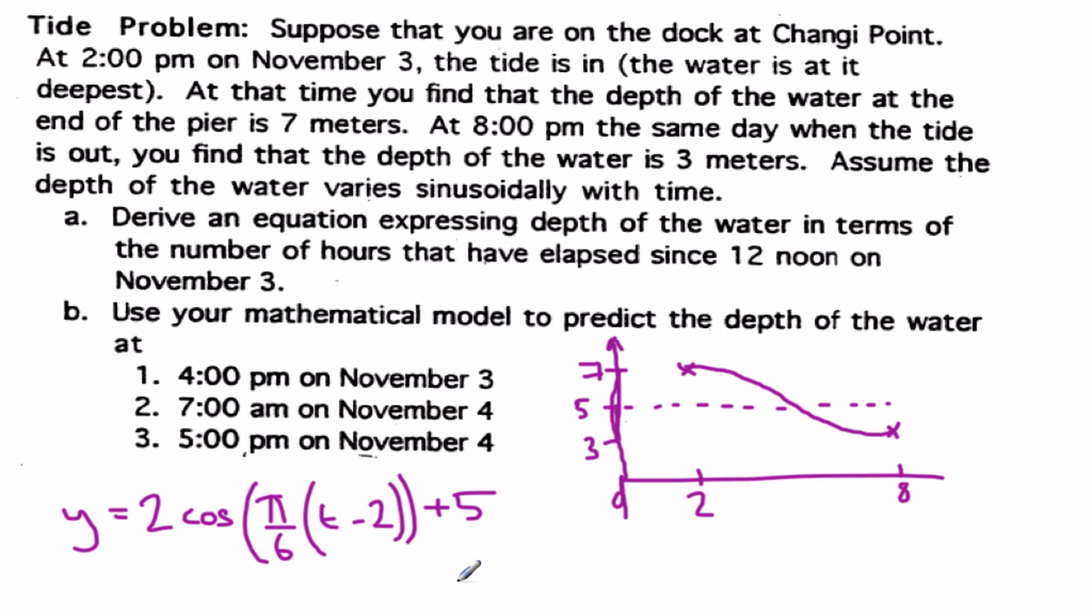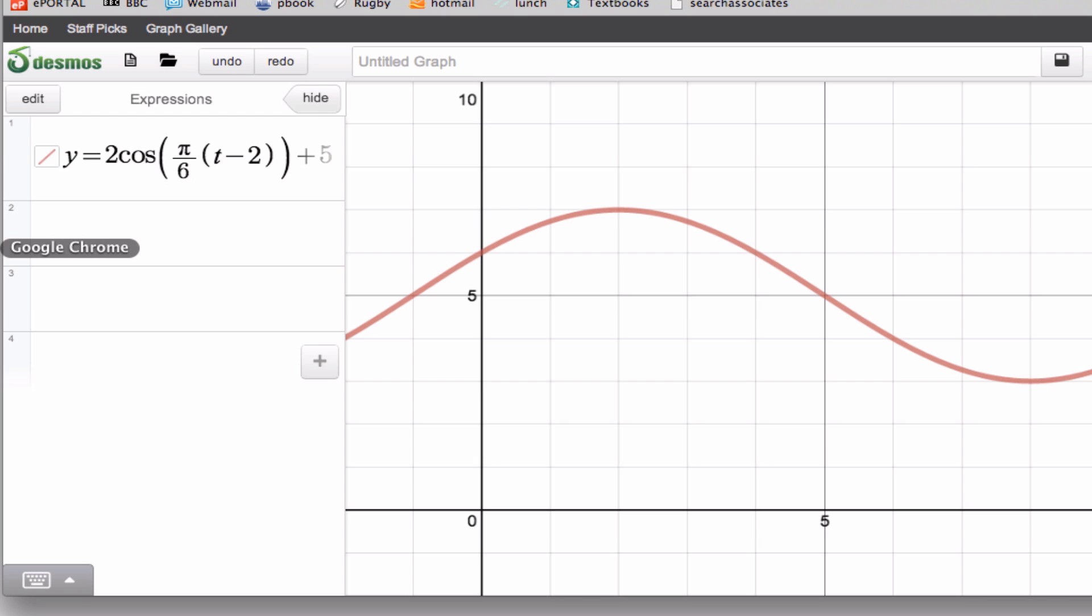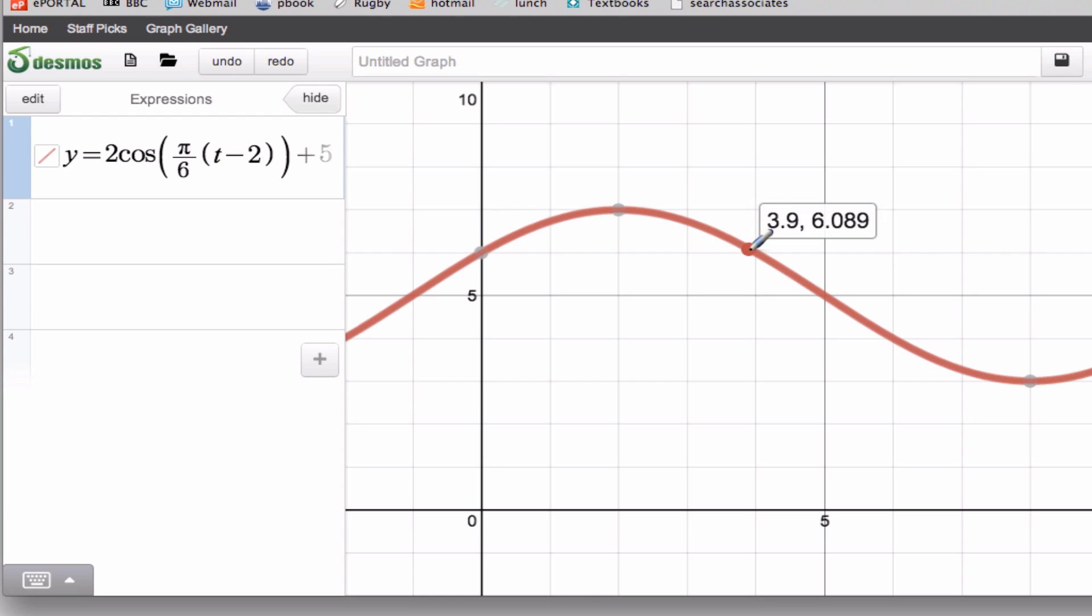Use your model to predict the depth of water at these different points. So 4 p.m. to start with. Let's just go to here's what I did earlier. So this is 12 noon. 4 p.m. we are here. So we've got a height of 6 meters.